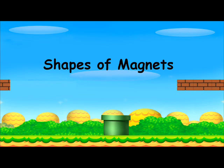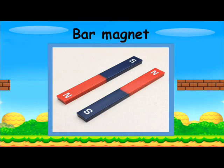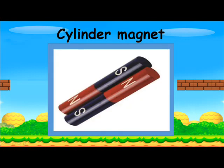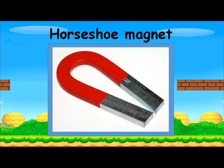Dear students, let's look at shapes of magnets. This is a bar magnet. This is a cylinder magnet. This is a horseshoe magnet.